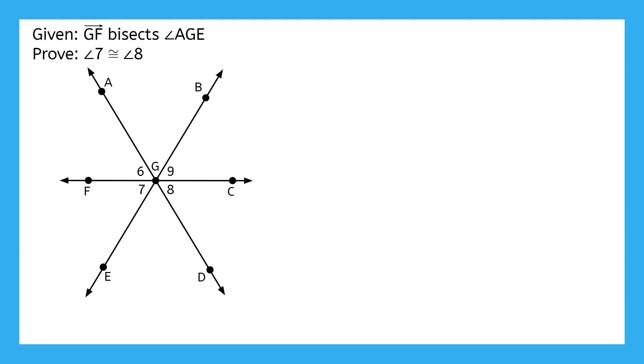Here's our proof. Given that Ray GF bisects angle AGE, prove that angle 7 is congruent to angle 8. We also have a picture here to help us out. Ultimately, we'll need to write a two-column proof to show why angle 7 is congruent to angle 8. However, these geometric proofs can be a lot trickier than the algebraic ones we did in the last lesson.